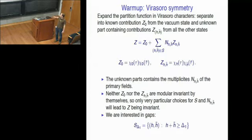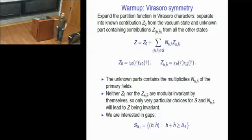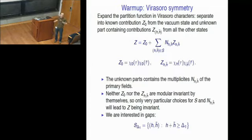What we're interested in are those multiplicities n and the spectrum — for which values of h and h-bar (the left and right-moving conformal weights) there are actually non-vanishing fields. The crucial point is that neither Z_0 nor Z_h is by itself modular invariant. Only if you choose those n's in a very clever way will you get something which gives a modular invariant partition function.